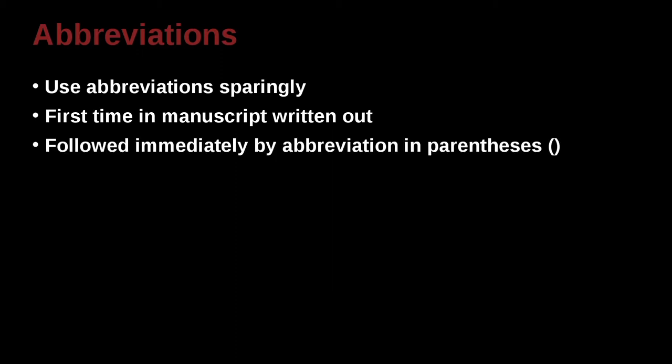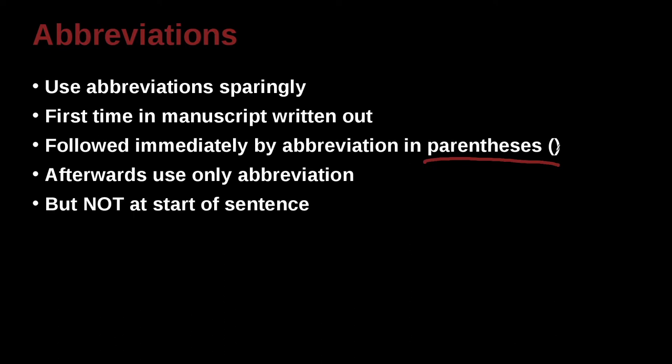Now the general rule is that when you have an abbreviation the first time in your paper, at that moment you're going to write the whole thing out, and then you're going to give the abbreviation inside of a parentheses. Then after that first time you always use the abbreviation, but never at the start of a sentence.